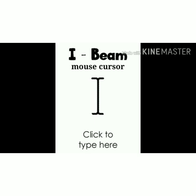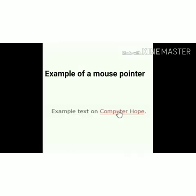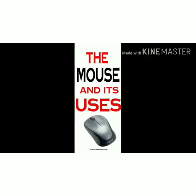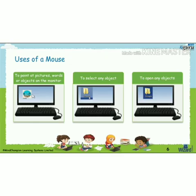This is the I-beam mouse pointer. Now let me give you an example of how the mouse pointer works. You can see on the screen the work of the mouse pointer. Now, the uses of a mouse — let's learn about what the uses of a mouse are. First, to point at pictures, words, or objects on the monitor. Second, to select any object. And third, to open any object.